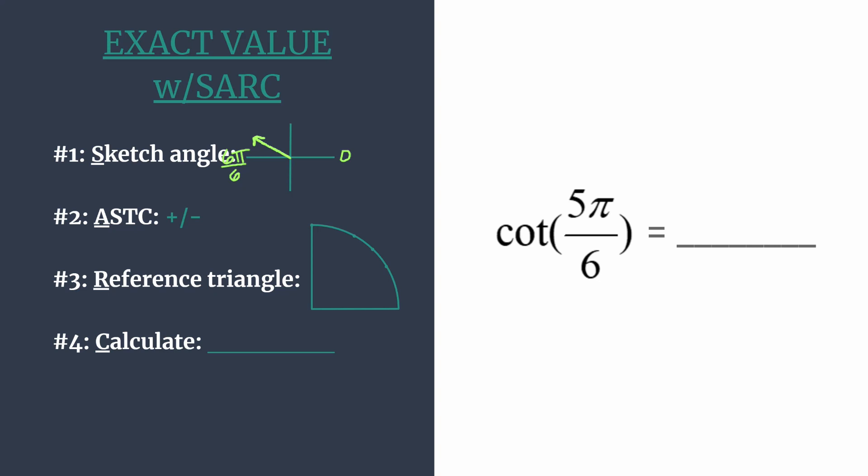Once you know your angle's in the second quadrant, you're ready for the next step. So A for ASTC, think all students take classes. And this is going to help you label your quadrants so you know which trig functions are positive in each. And then you can use that to make your determination on is your final answer positive or negative.